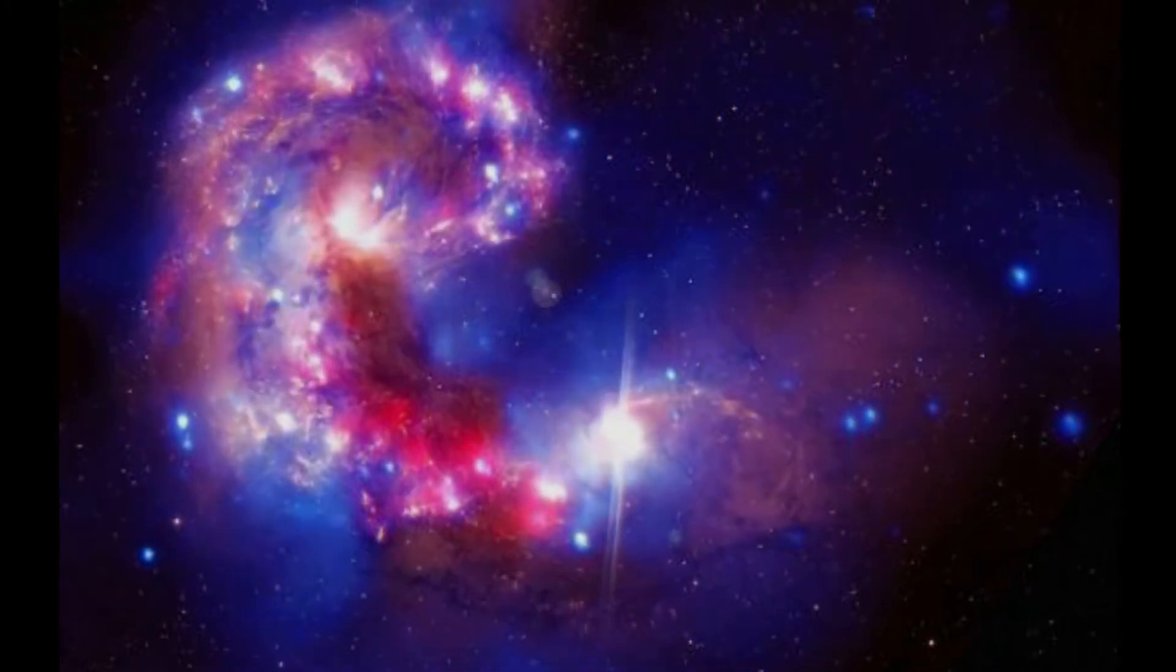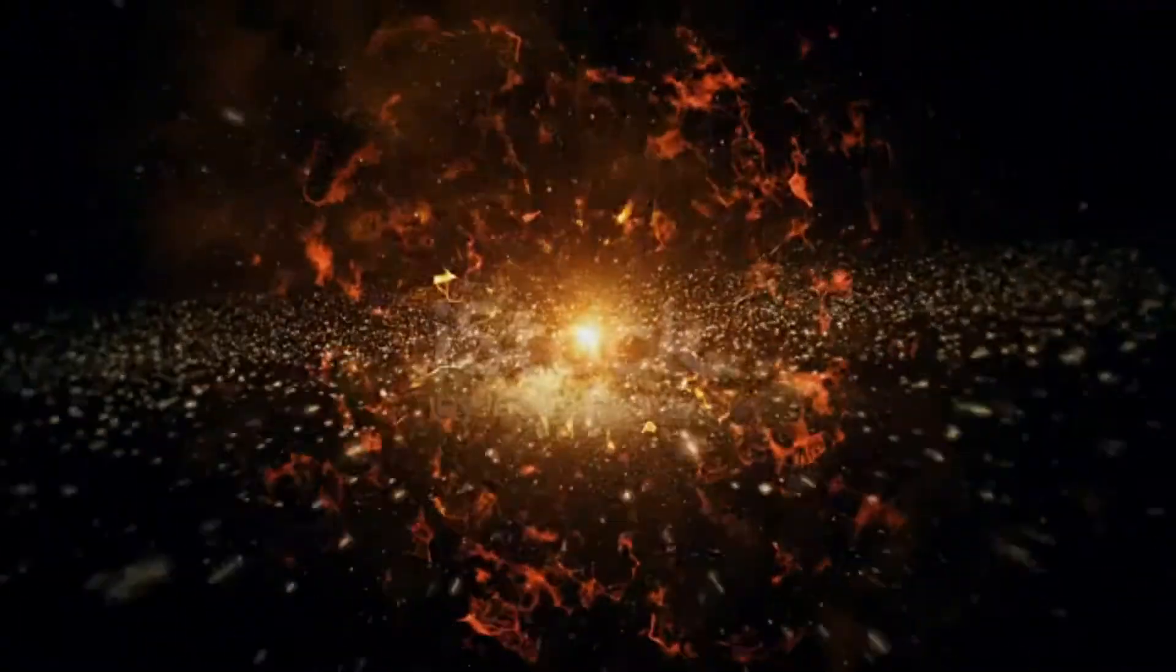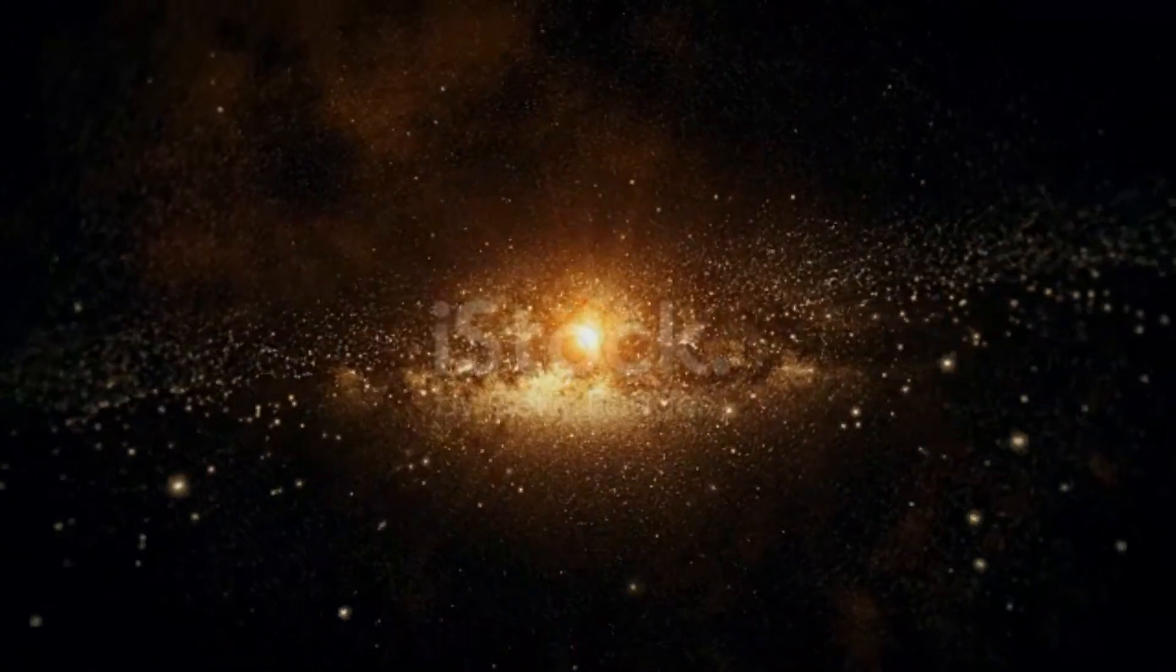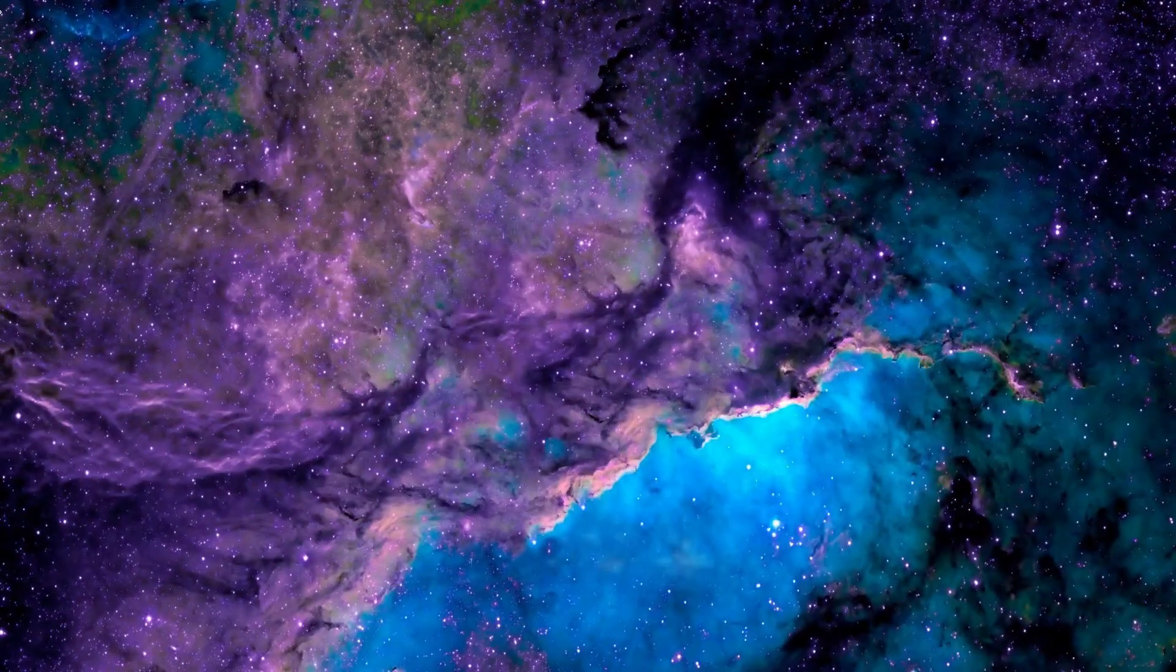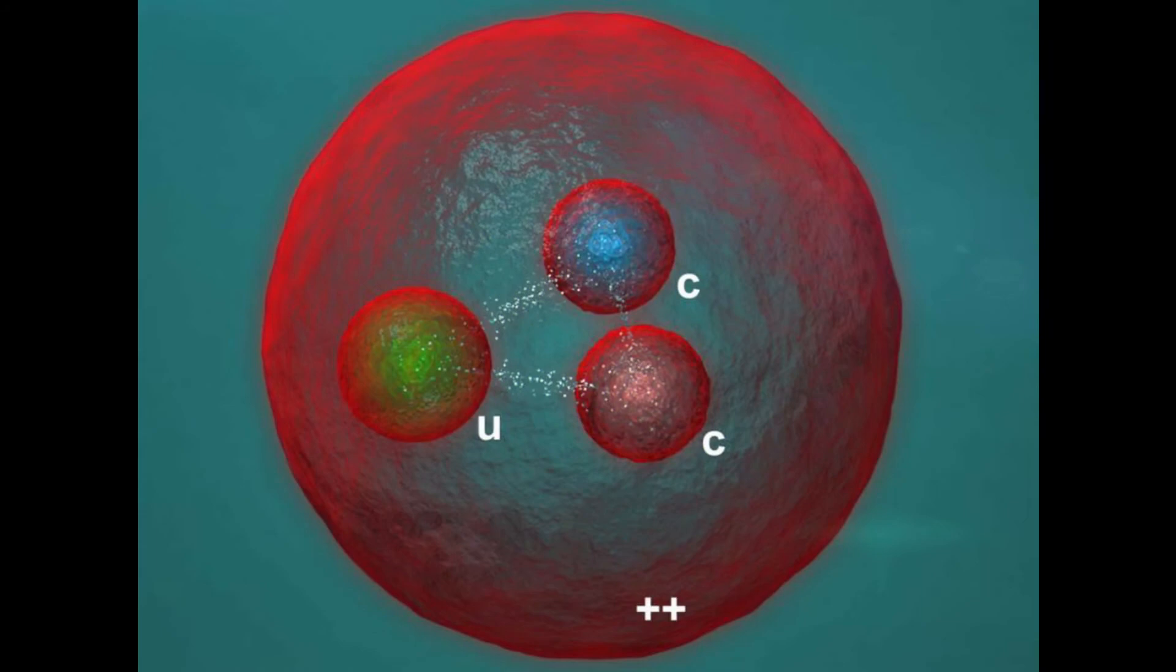It took 380,000 years for the universe to cool enough to slow down the electrons so that the nuclei could capture them to form the first atoms. The earliest atoms were primarily hydrogen and helium, which are still the most abundant elements in the universe. As of today, quarks are the smallest particle we have come across.